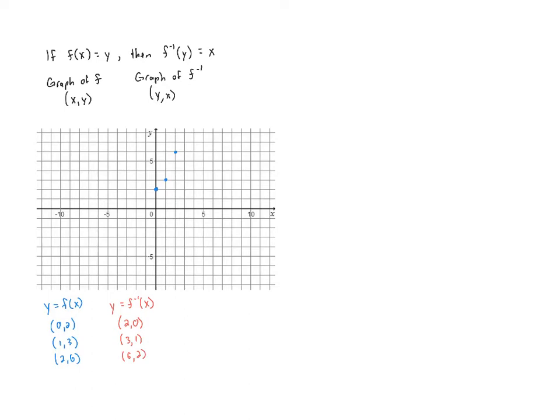Let's plot those points and see if we can find a relationship between these graphs. We've got 2 comma 0, we've got 3 comma 1, and 6 comma 2. Is there any relationship between these sets of points? Is there any sort of symmetry? There is a specific type of symmetry, but it's not a type of symmetry that we've seen before.